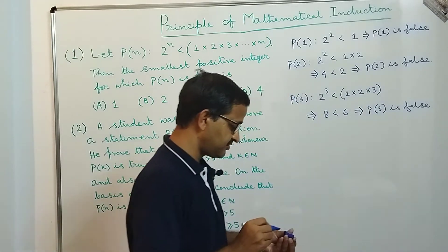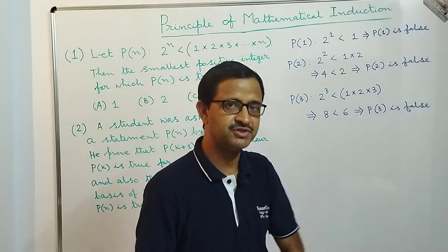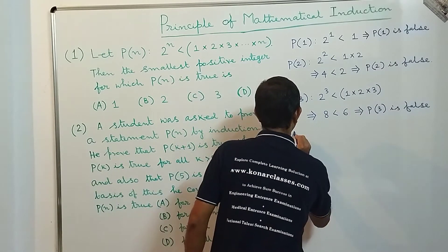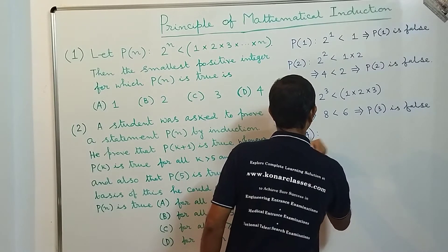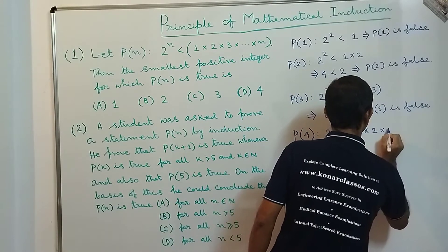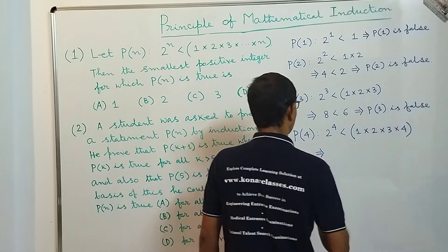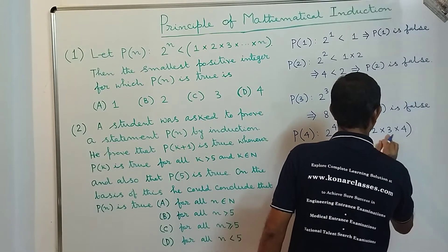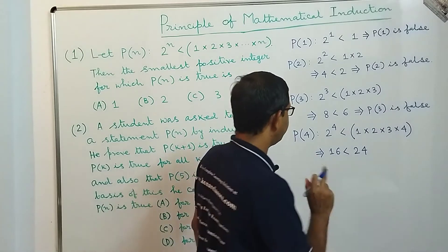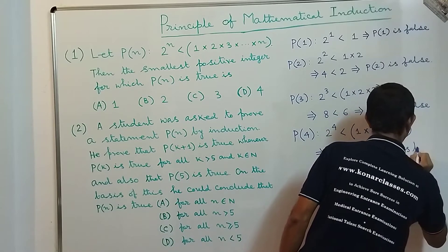So for n=1, 2, and 3 the mathematical statement is not true. Now let's check P(4), i.e., for n=4. P(4) states 2^4 < 1·2·3·4, which implies 16 < 6·4 = 24. Yes, 16 < 24, so P(4) is true.